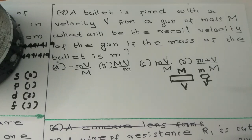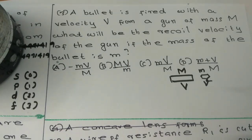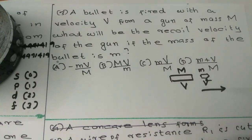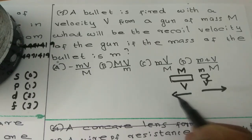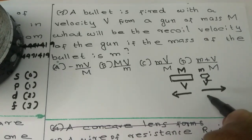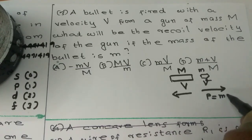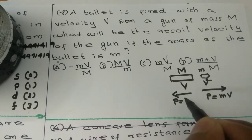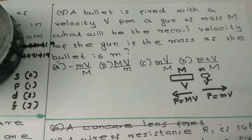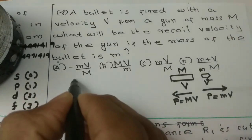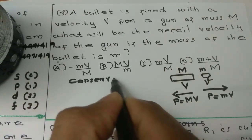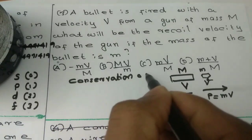In the initial condition, the mass of the gun and the velocity of the gun — initially the gun is at rest, so velocity is zero. The bullet fires in one direction and the gun moves in the opposite direction. The momentum is mass into velocity, and we apply the law of conservation of momentum.